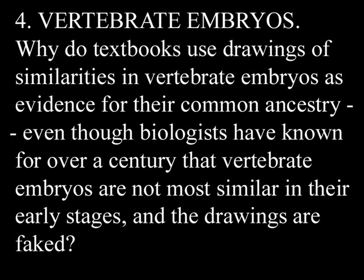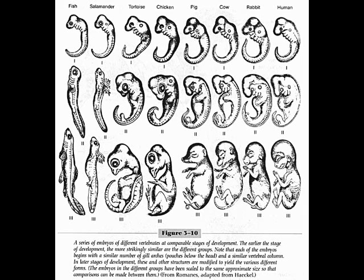Number 4: Vertebrate Embryos. Why do textbooks use drawings of similarities in vertebrate embryos as evidence for their common ancestry, even though biologists have known for over a century that vertebrate embryos are not most similar in their early stages and the drawings are faked? The drawings in question were done by Ernest Haeckel, a German man who studied embryos of various vertebrates and made these drawings based on his research.